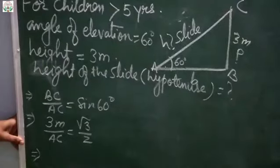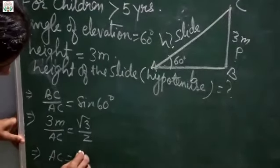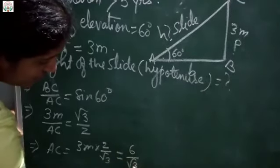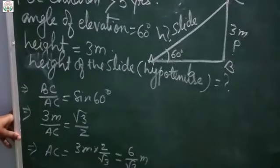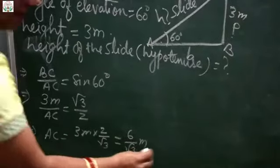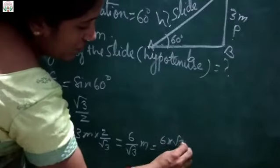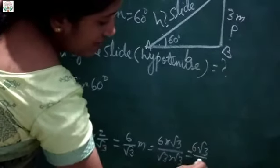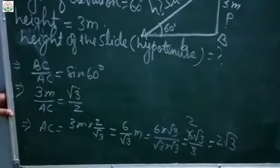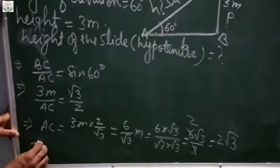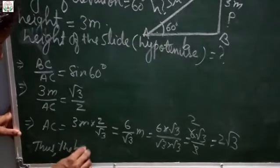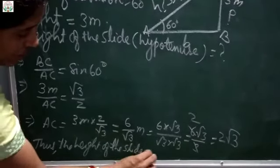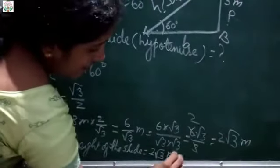Cross multiplying: AC equals to 3 meter into 2 upon root 3, which equals to 6 upon root 3 meter. Rationalizing by multiplying root 3 in numerator and denominator: 6 root 3 upon 3 equals to 2 root 3. Thus, the length of the slide for elder children equals to 2 root 3 meter.